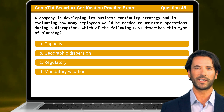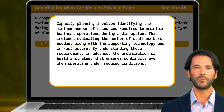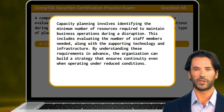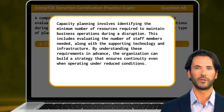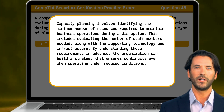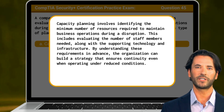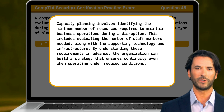The answer is A. Capacity. Capacity planning involves identifying the minimum number of resources required to maintain business operations during a disruption. This includes evaluating the number of staff members needed, along with the supporting technology and infrastructure. By understanding these requirements in advance, the organization can build a strategy that ensures continuity even when operating under reduced conditions.